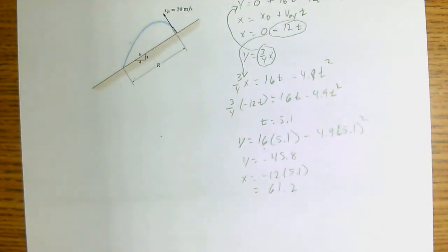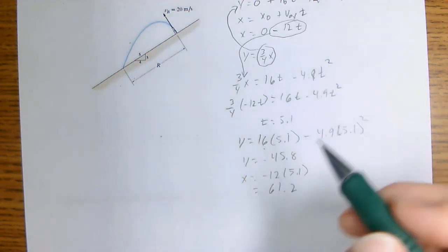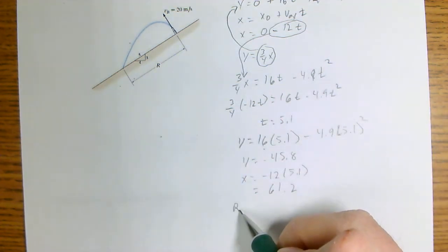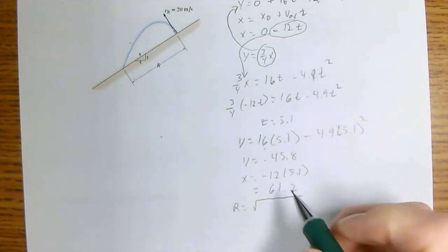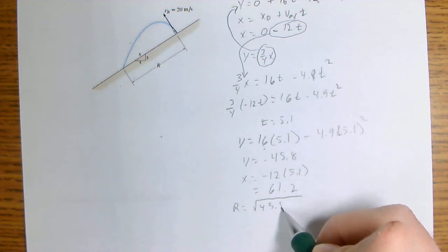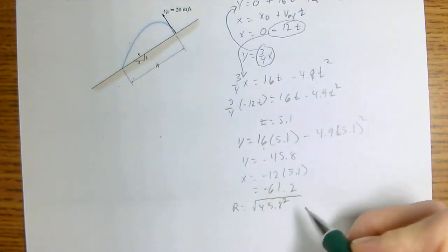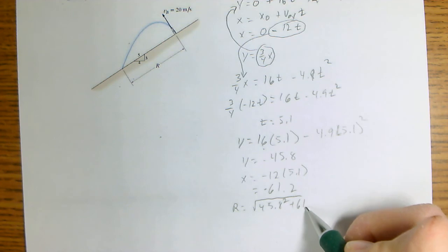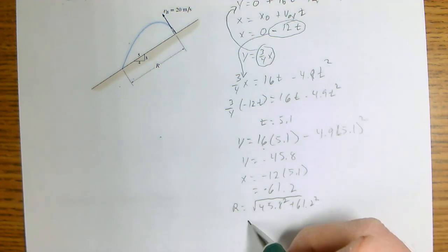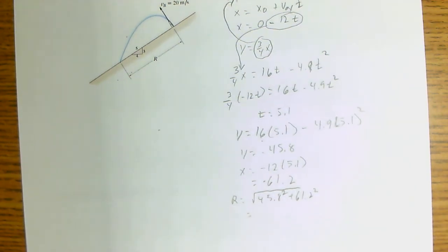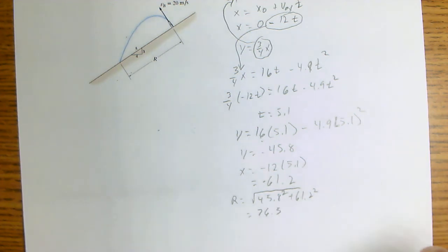And then to find the range, all we need to do is the Pythagorean theorem. So the range equals the square root of 45.8 squared plus 61.2 squared, and the range is equal to 76.5.